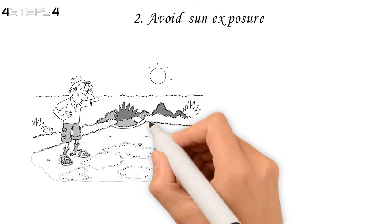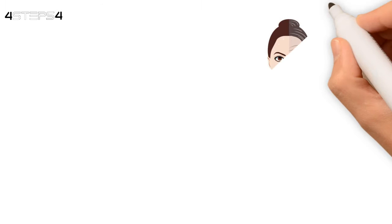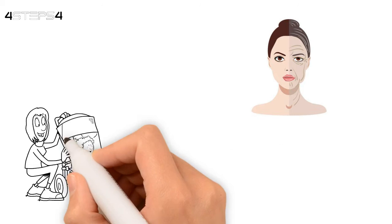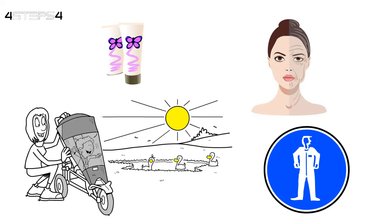2. Avoid sun exposure. Protect your skin from the harmful rays of the sun. Sun exposure increases the risk of skin cancer and causes age spots, wrinkles and other issues. If you really need to go out, use sunscreen generously and wear protective clothing.